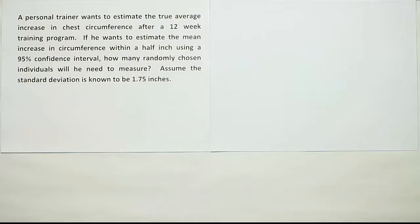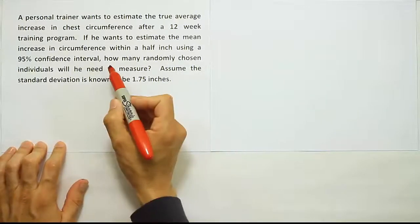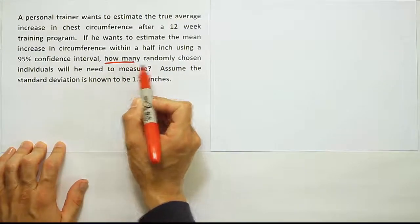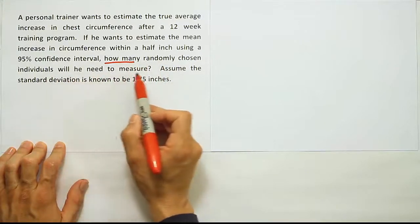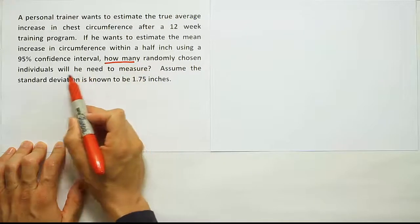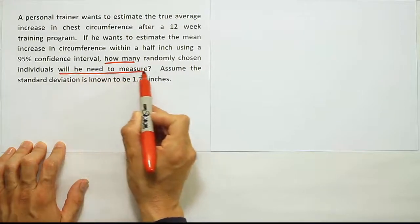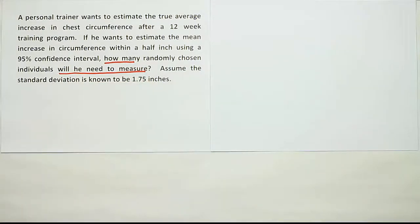The first thing I want to do is identify the key phrases. The phrase "how many randomly chosen individuals will he need to measure" tells us what to do. How many people will he need to measure? That indicates a sample size problem.